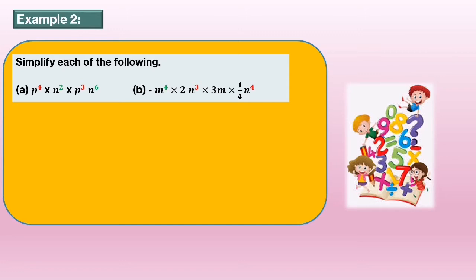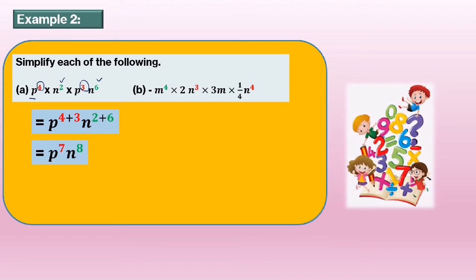Now let us look at Example 2: simplify each of the following. Part a: p power of 4 times n power of 2 times p power of 3 times n power of 6. To answer this, we need to group the algebraic terms with the same base first, then add the indices. So p: indices are 4 and 3, giving p power of 4 plus 3; n: indices are 2 and 6, giving n power of 2 plus 6. The answer is p power of 7 times n power of 8.